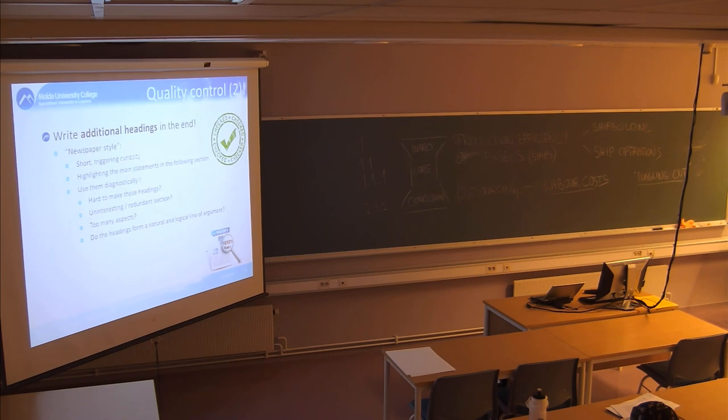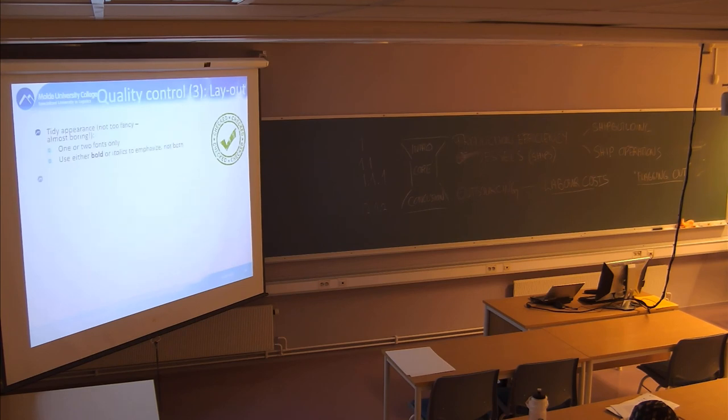And every small section should have maybe just one major point. Then you can make another section. So you can also use these headings diagnostically. If it's hard to make them, it could be that the next section is uninteresting, redundant. You could just delete it. Or it could be that it has too many aspects and should be divided. There are too many points. It's not possible to summarize it in one of these sentences. And then, towards the end, just read the headings. Is this a logical order? Or should I move this paragraph up or down in my system?